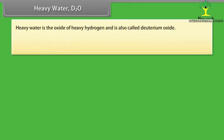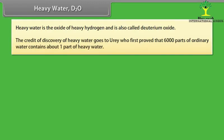Heavy water: Heavy water is the oxide of heavy hydrogen and is also called deuterium oxide. The credit of discovery of heavy water goes to Urey who first proved that 6000 parts of ordinary water contains about one part of heavy water.